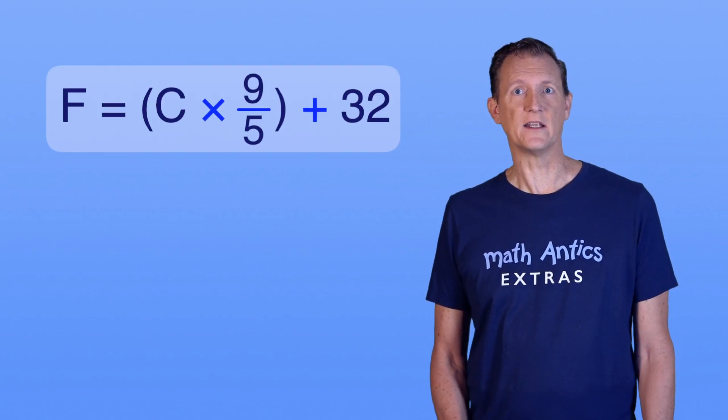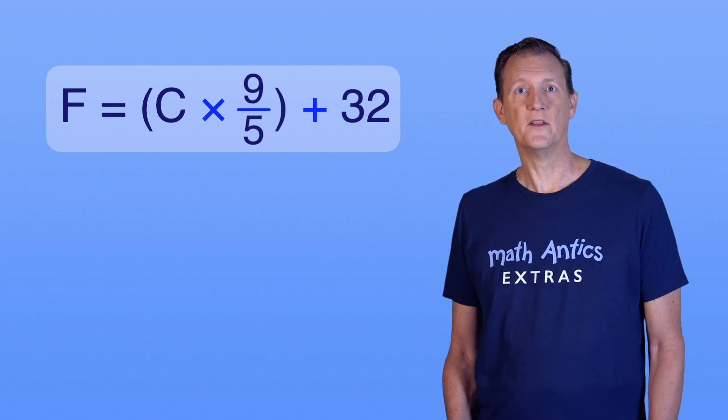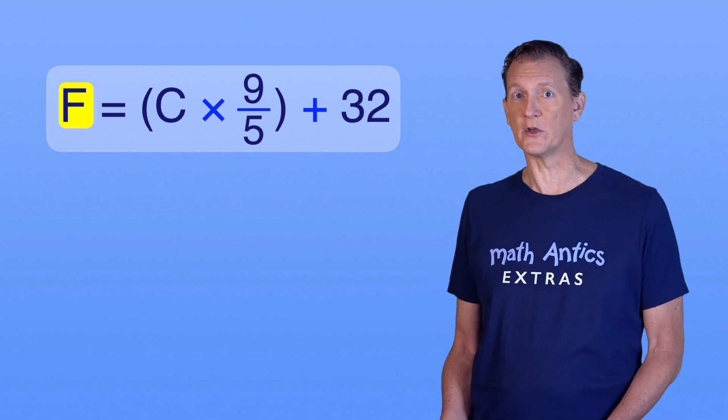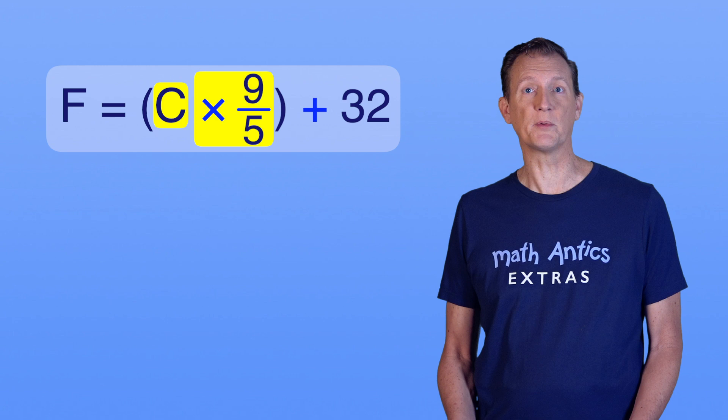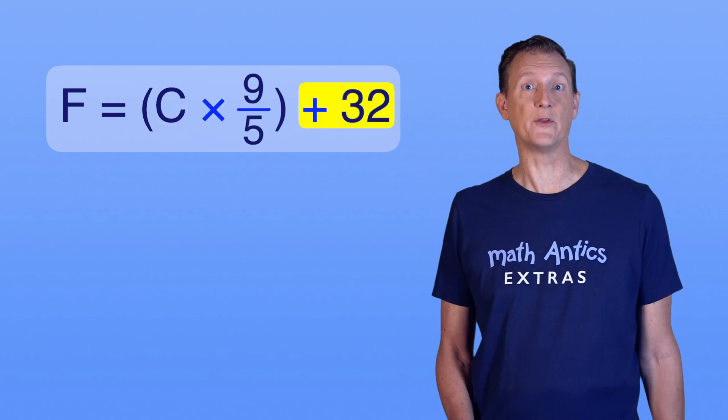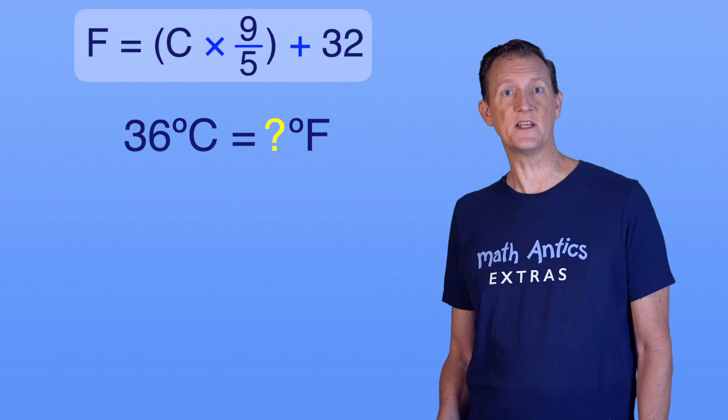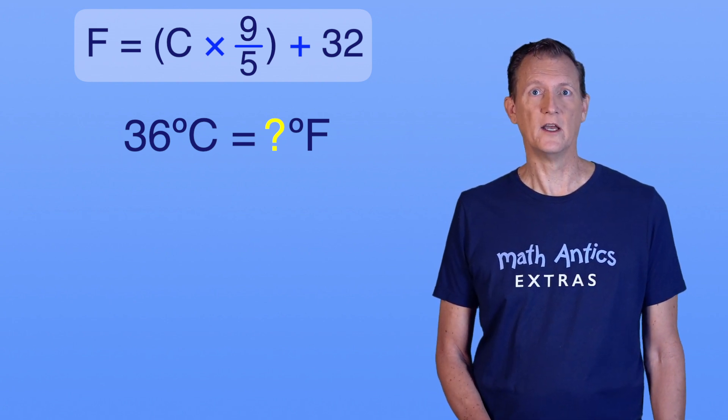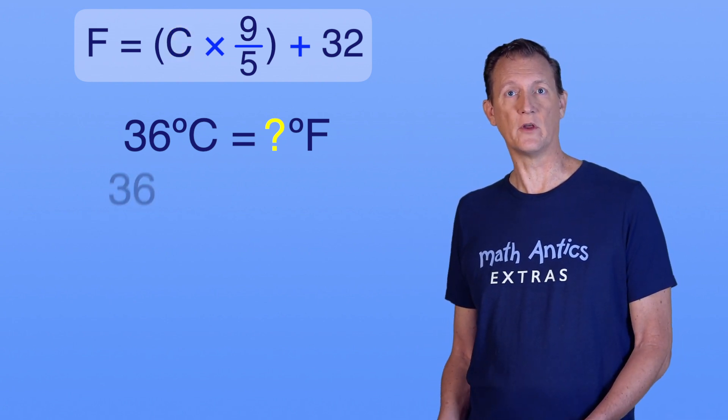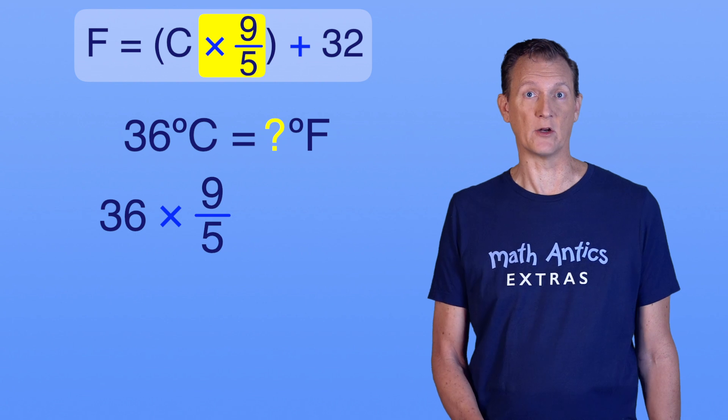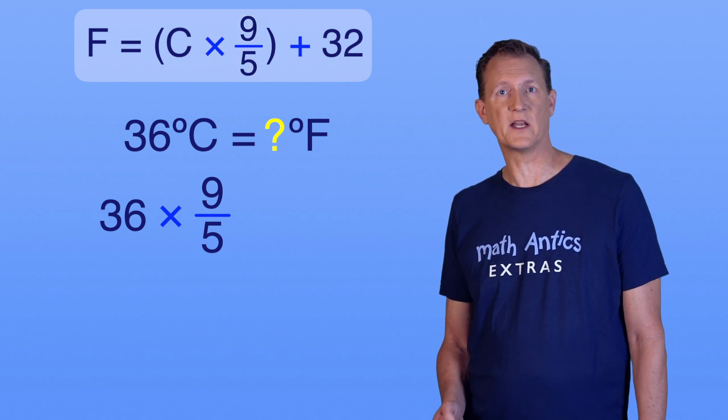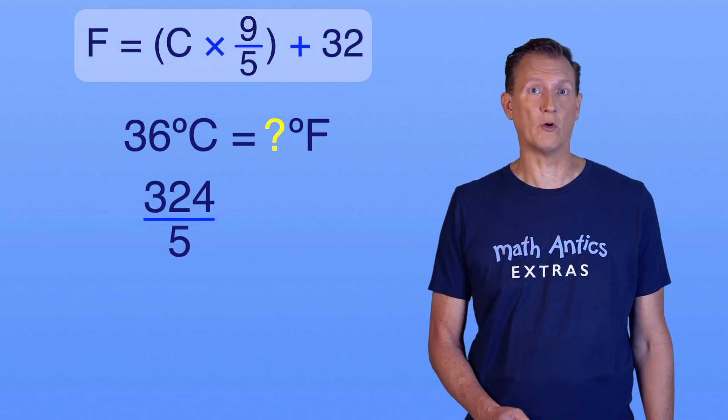Now, let's convert a Celsius value to Fahrenheit. The procedure for that is F equals C times 9 over 5 plus 32. This tells us that to get the Fahrenheit value, we take the Celsius value and multiply it by 9 over 5. Then we add 32 to that. Let's use that procedure to convert 36 degrees Celsius to its value in Fahrenheit. First, we take our Celsius value, 36, and multiply it by 9 over 5. 36 times 9 over 5 equals 324 over 5.